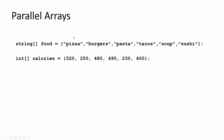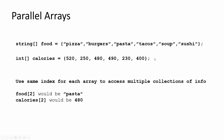The first element - index zero - would be pizza with 520 calories, and sushi with 400 calories. These are made-up numbers; the calories are probably not accurate. What you do is use the same index for each array to access multiple collections.